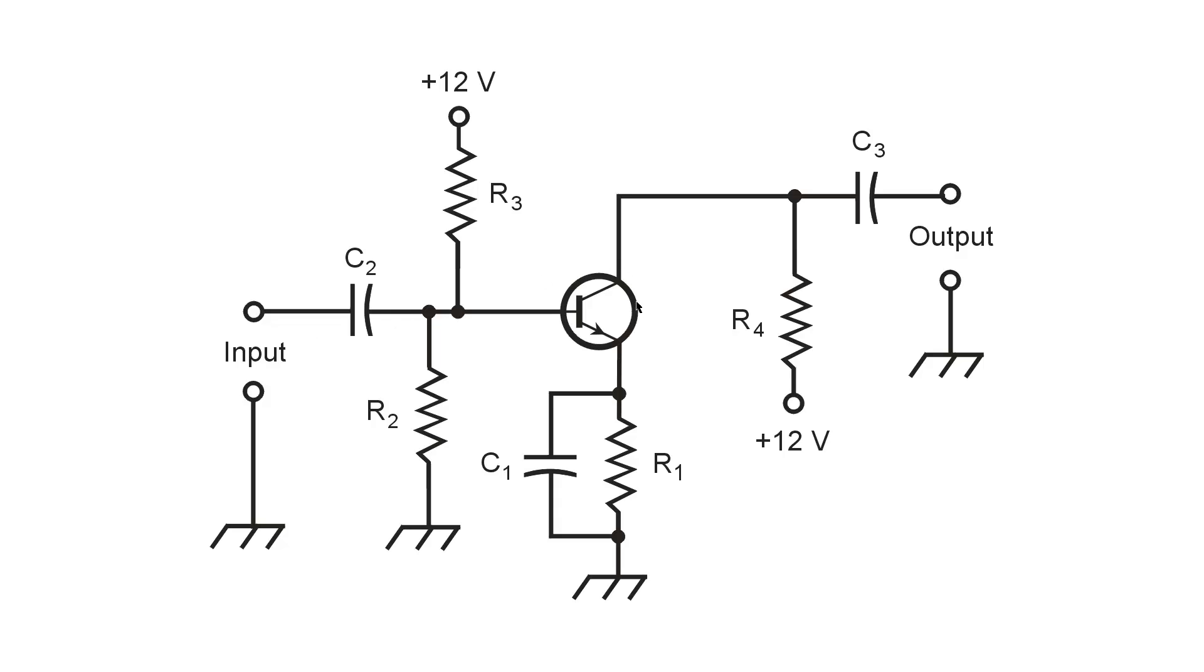This is a current amplifier because it takes a small current change between the base and the emitter and turns it into a large current fluctuation between the emitter and the collector. But ultimately, it doesn't make a whole lot of difference. What you get is a low voltage, very weak signal, perhaps only a few microvolts peak-to-peak AC signal here, and maybe several millivolts peak-to-peak AC signal here. So you are amplifying the voltage of the signal, but the transistor itself is amplifying current changes. Kind of a paradox there.